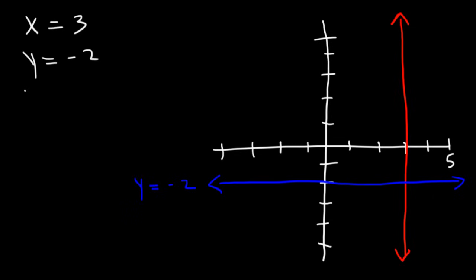Try these two. Try x = -3 and y = 4. Go ahead and plot those. So at -3, x = -3, that's going to be a vertical line. So it looks like that.